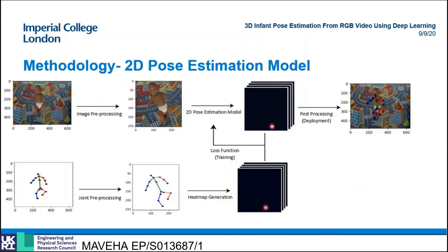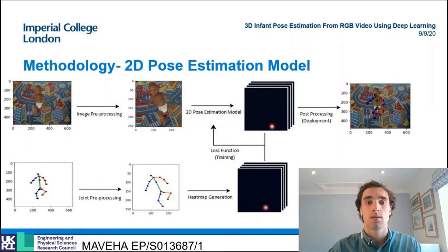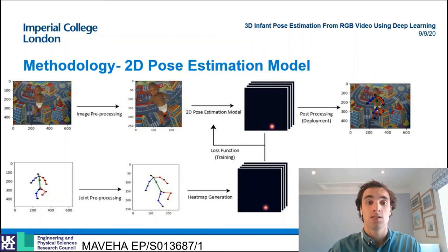The next step in the pipeline is the 2D pose estimation — the task of estimating the pixel coordinates of a number of key points such as elbows and knees from an input image.